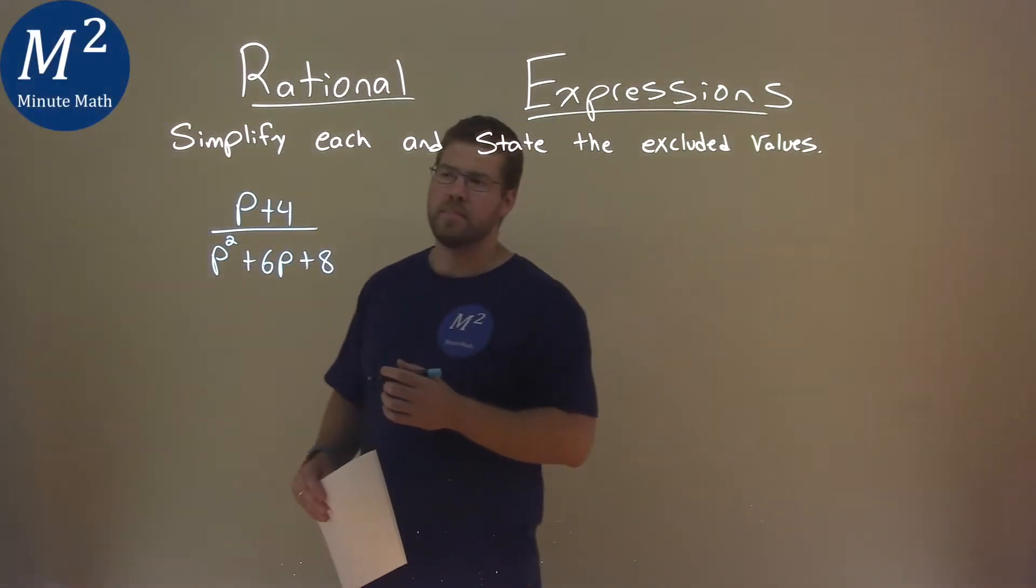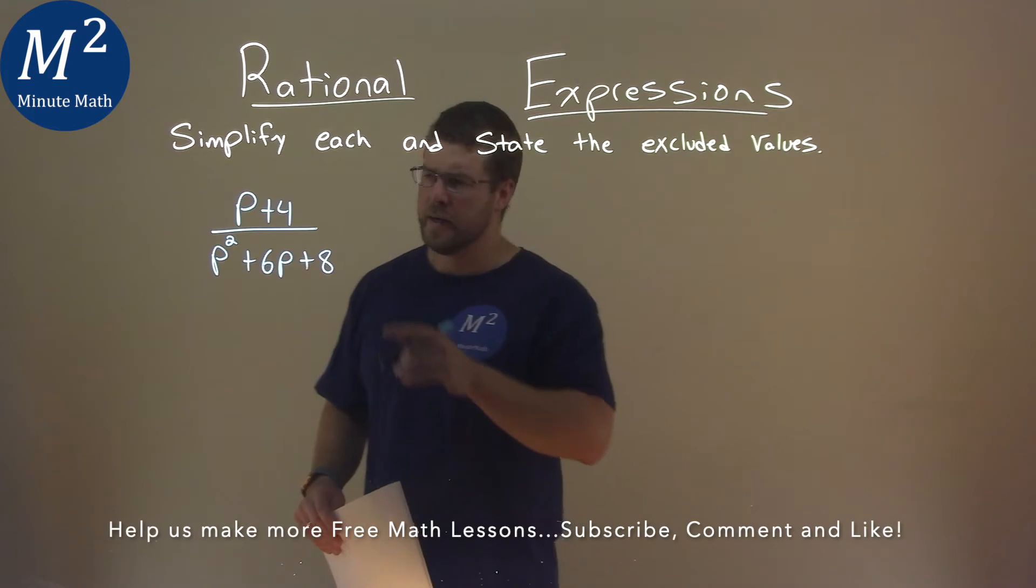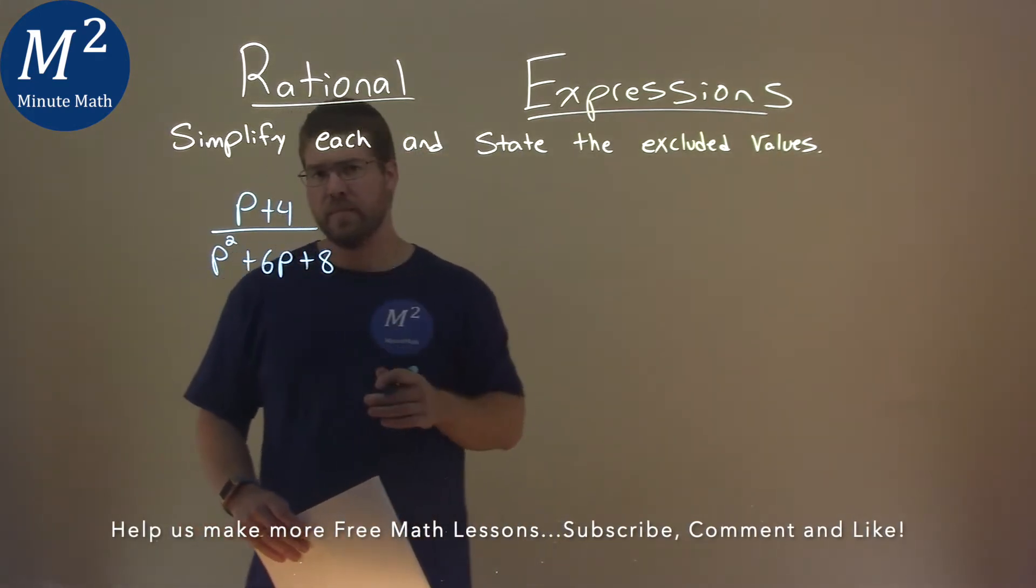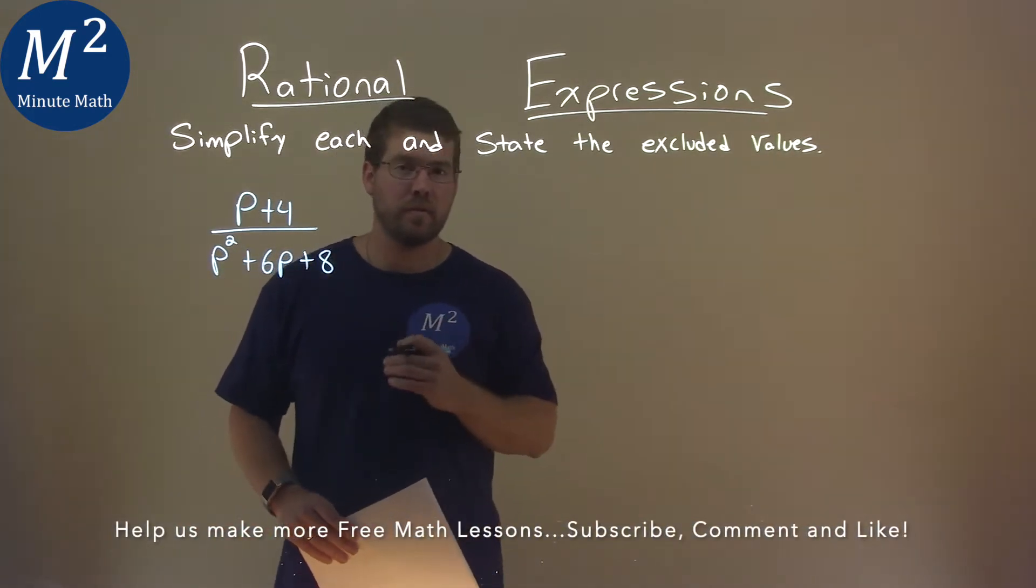We're given this problem right here: p plus 4 over p squared plus 6p plus 8, and we need to simplify this and state the excluded values.